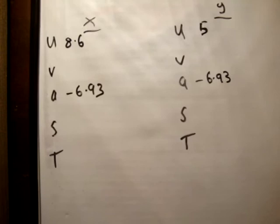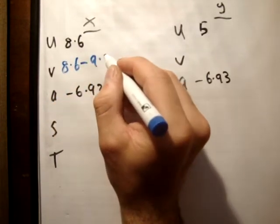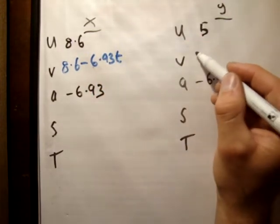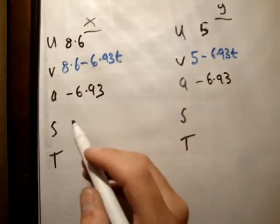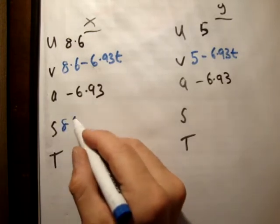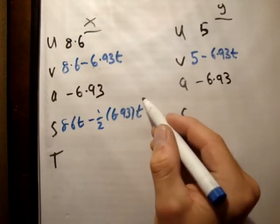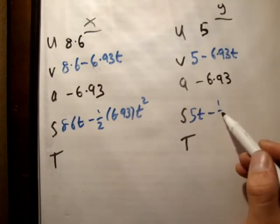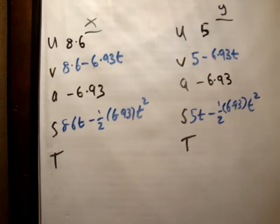So, we need to finish off this, and we'll do it very quickly. We know that V is equal to U plus AT, so it's equal to 8.6 minus 6.93 T, and it's equal to 5 minus 6.93 T. This is equal to UT plus 1 half AT squared, so 8.6 T minus 1 half 6.93 T squared, and 5 T minus 1 half 6.93 T squared.